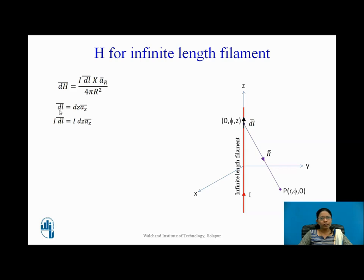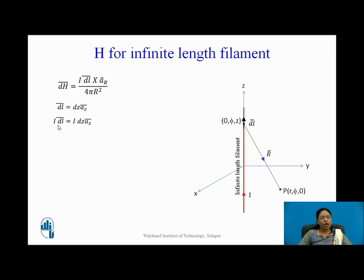DL bar here is DZ AZ bar. Why DZ AZ bar? Because the filament is placed along the Z axis, ranging from minus infinity to plus infinity. When I consider a small section DL bar, it comes to be DZ AZ, as it is along the Z axis. When multiplied with I, I DL bar is I DZ AZ bar.